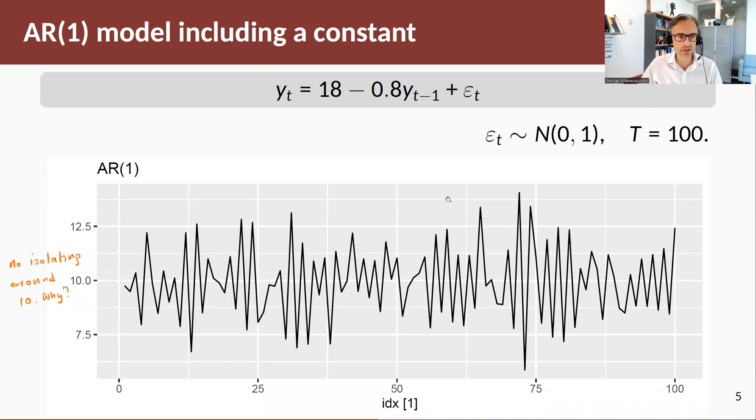Let's now include a constant in the data generating process, so my constant is 18. The oscillating behavior is the same because I have the same coefficient, but I've added a constant. The constant is 18, but notice the oscillating behavior is not around 18, but around 10. Why is that the case?